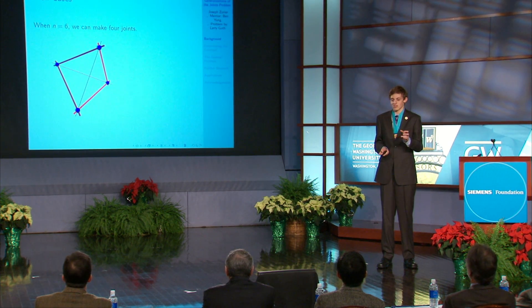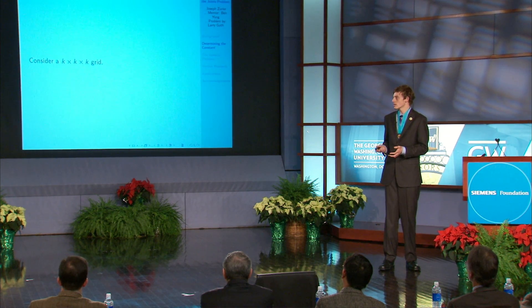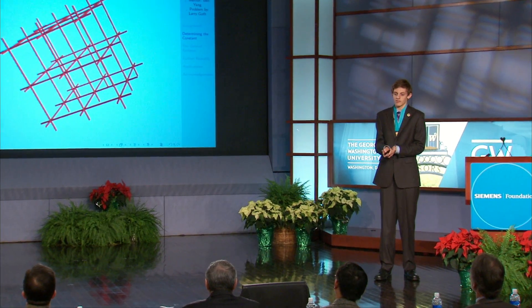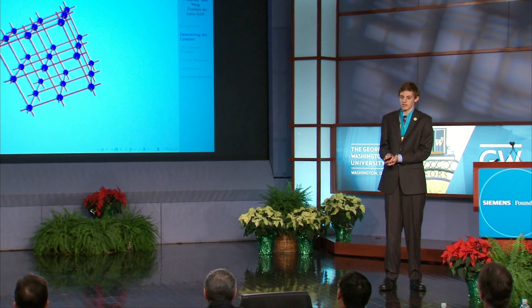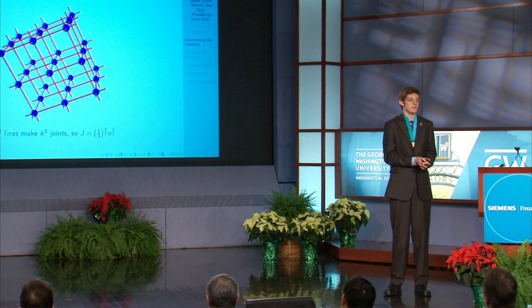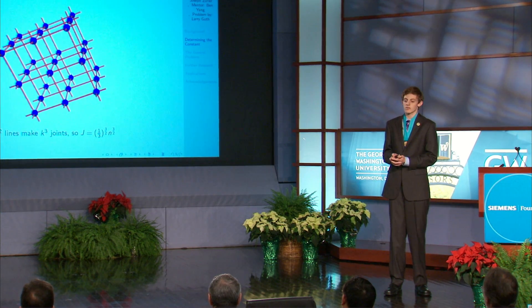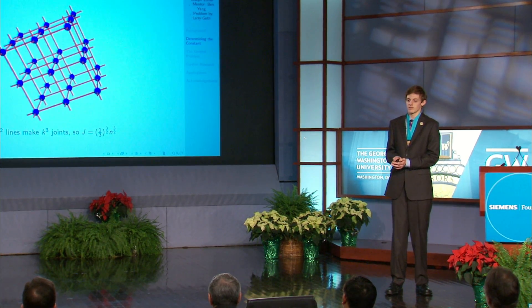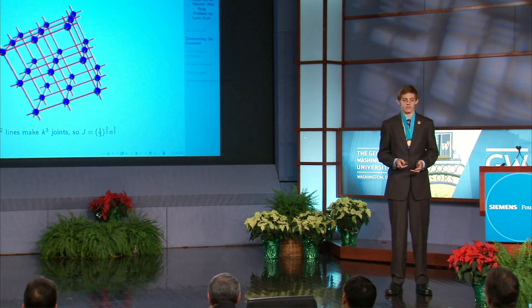We have to go straight from six to infinity. A lower bound is pretty easy to come by, because all we have to do is arrange the lines in a clever way and count the number of joints we create. For the first lower bound, we consider a grid of lines, k by k by k. All of the grid points are joints by our definition. We have 3k² lines, and they determine k³ joints. Solving for k³ in terms of 3k², the number of joints equals n to the 3/2 times some constant factor.